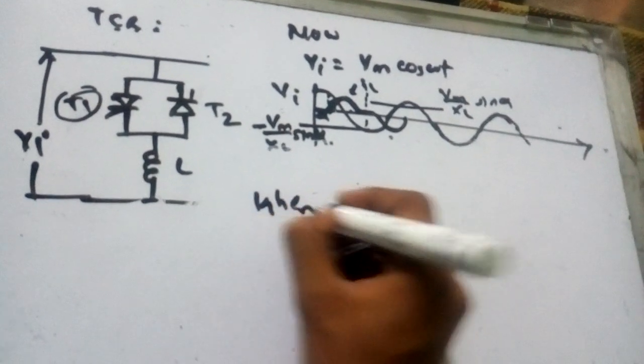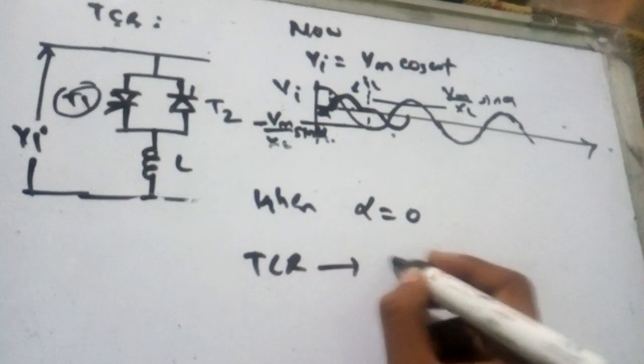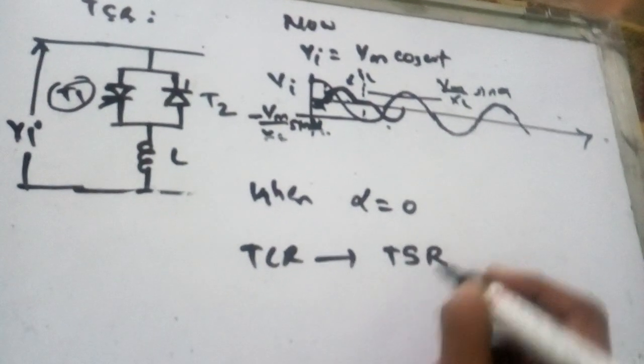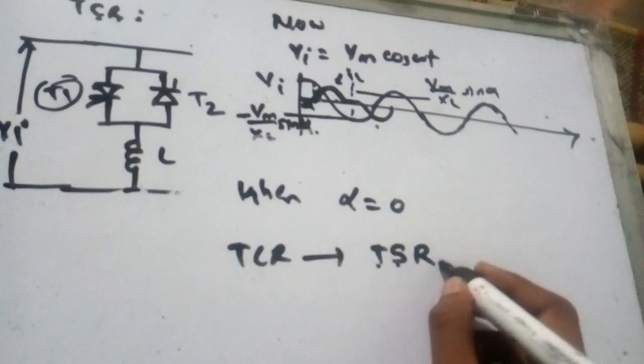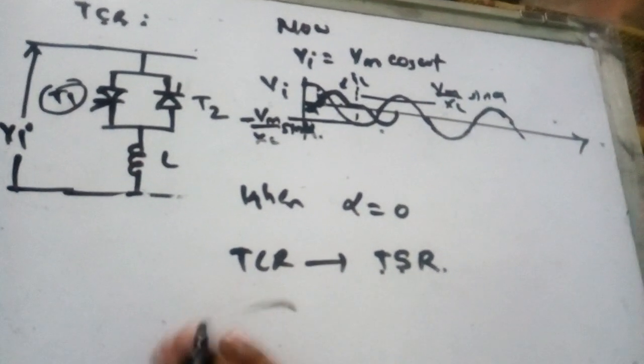When alpha equals 0, then TCR becomes TSR, that is thyristor switched reactor.